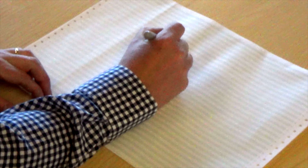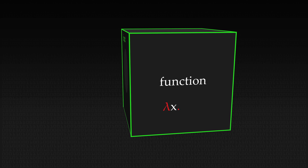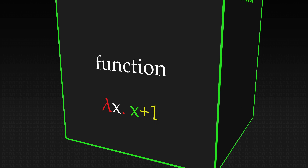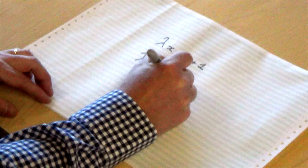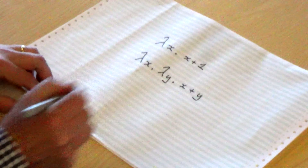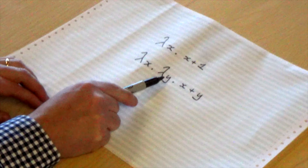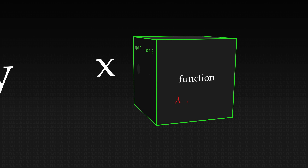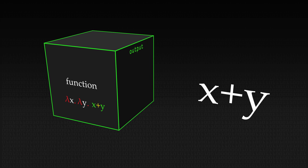In the lambda calculus there is a very simple syntax. For the increment function, you write a lambda symbol — the Greek lowercase letter lambda — followed by the input name x, then a dot, then how the output is calculated: x plus one. For addition, you need two lambdas: lambda x dot lambda y dot x plus y. This is the function that takes two inputs x and y and delivers the result x plus y.